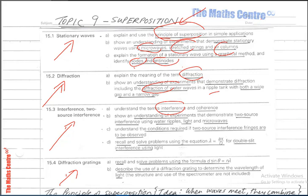Under interference, we will talk about interference itself and about coherent sources of waves. We will show an understanding of experiments that demonstrate two-source interference using water ripples, light and microwaves. We will understand the conditions required if two-source interference fringes are to be observed, and then we will use the formula λ = ax/d when dealing with double slit interference using light.